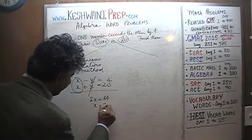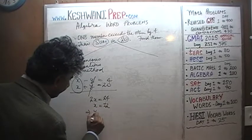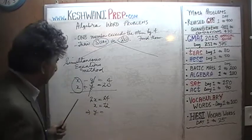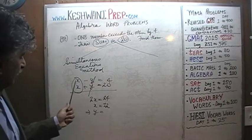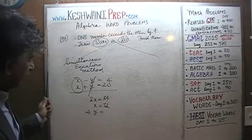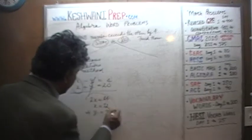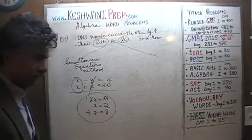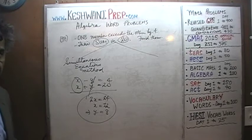x equals 12. Therefore, since x minus y equals 4 and x is 12, y must be 8. That's it — we're done. And that's called the simultaneous equations method.